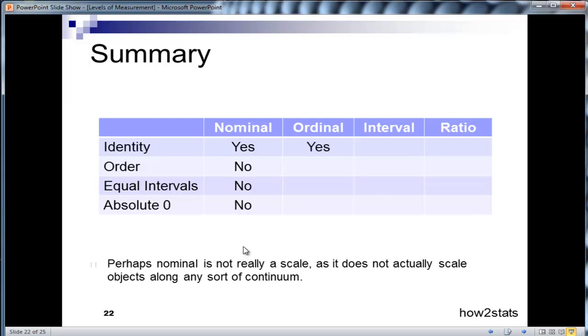Now ordinal also has the property of identity, and it also has the property of order, because there are ordered categories. You'll recall that friends were rank ordered from one to five, or the Likert scale item, where from strongly disagree to strongly agree, that's an order. And it obviously has identity, because there are labels associated with each of those categories.